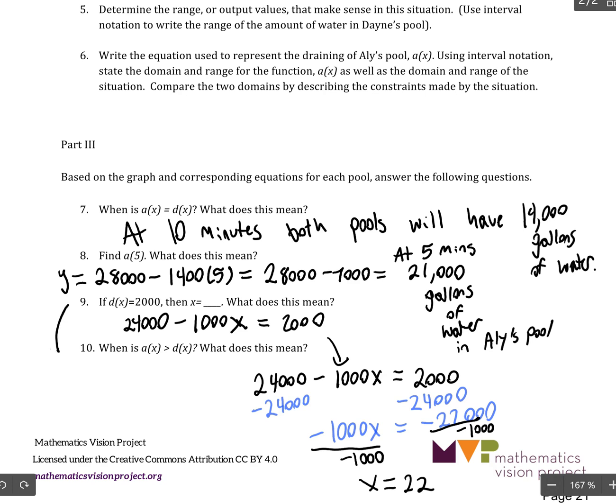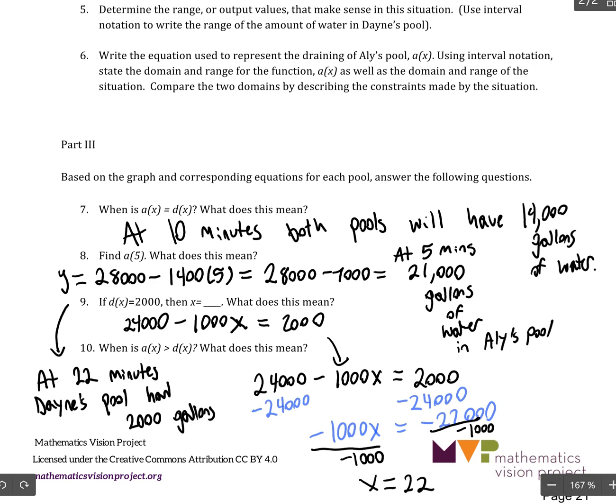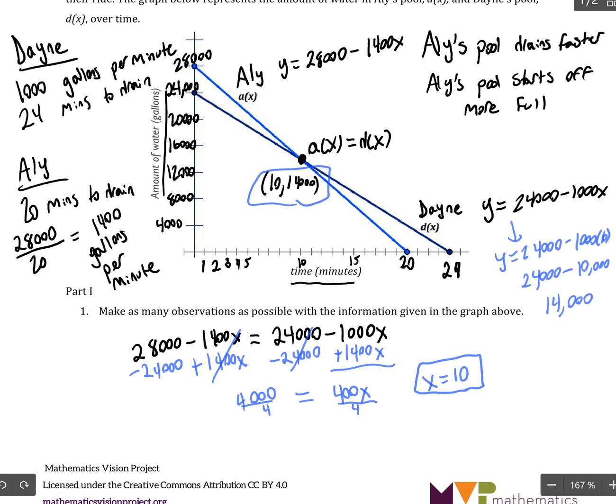So, that's telling us for number 9 that at 22 minutes, Dane's pool had 2,000 gallons. And you probably could have figured that out just by thinking through it logically without solving an equation. But I just wanted to show you that connection. And we could see that on the graph at 22 minutes right here. That makes sense. That point to be 2,000 gallons.